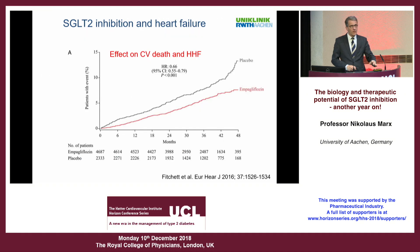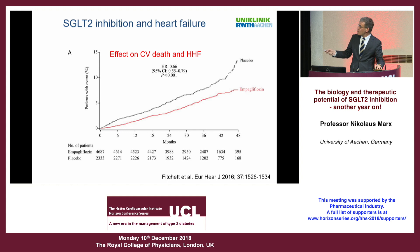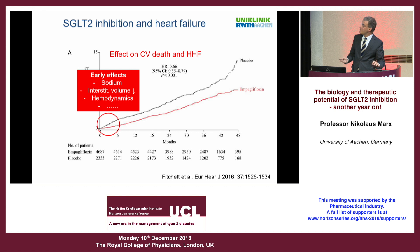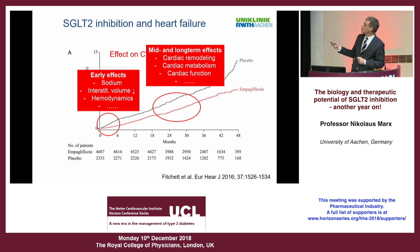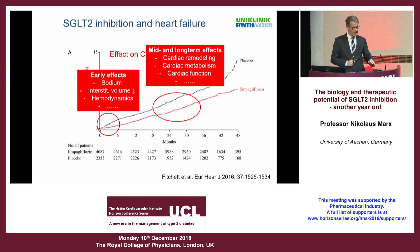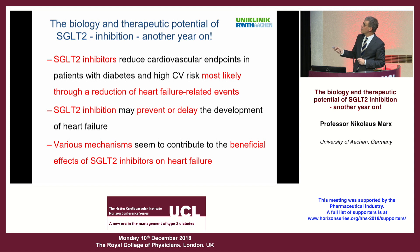Putting all this together: the early effects seen in the EMPA-REG OUTCOME trial after three weeks may be explained by effects on sodium depletion and interstitial volume and hemodynamics, while mid- and long-term effects may be due to cardiac remodeling, cardiac metabolism, and cardiac function. In summary: SGLT2 inhibitors reduce cardiovascular endpoints in subjects with diabetes and high cardiovascular risk, most likely through reduction of heart failure-related events. SGLT2 inhibition may prevent or delay the development of heart failure, and various mechanisms seem to contribute to these beneficial effects.